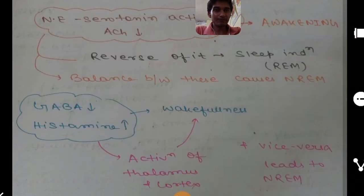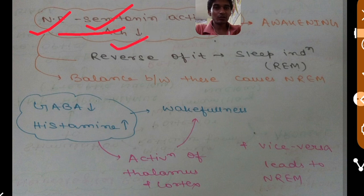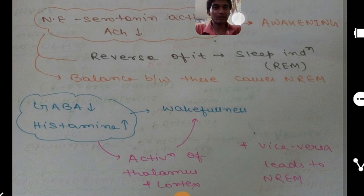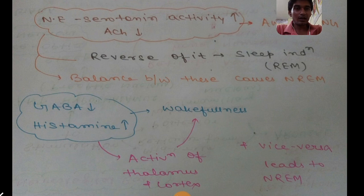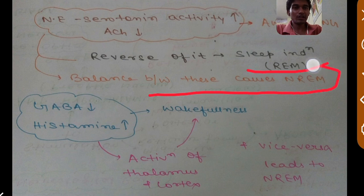When the neurons releasing norepinephrine and serotonin are more active than the cholinergic neurons, it causes arousal — that is, awakening of the animal. The reverse: when acetylcholine-releasing neurons become more activated compared to norepinephrine and serotonin neurons, it causes REM sleep. A balance between these two will induce NREM sleep.